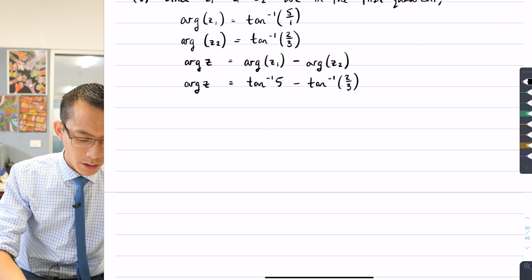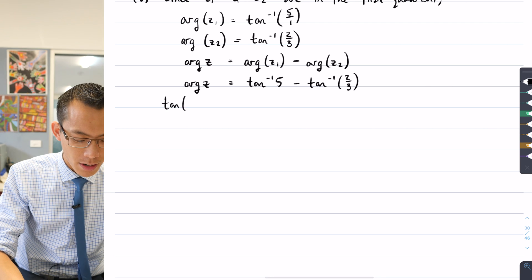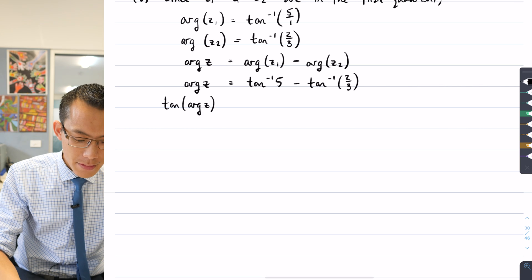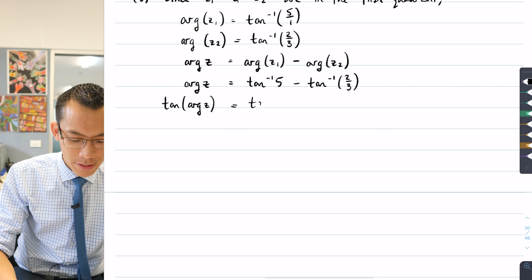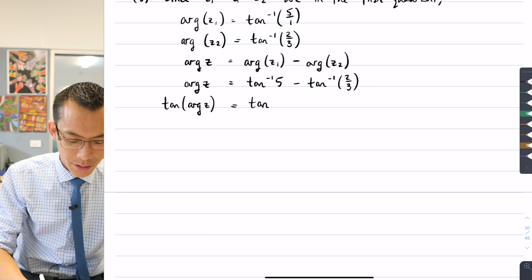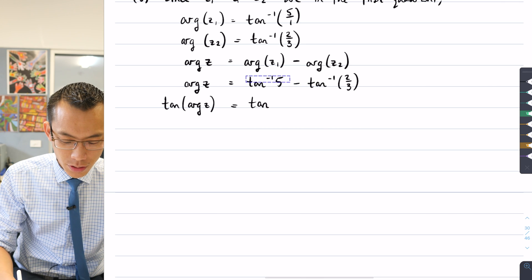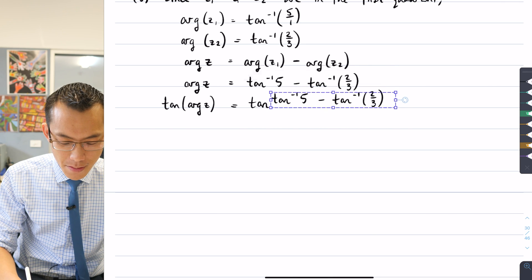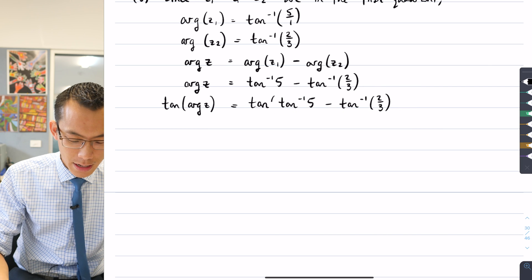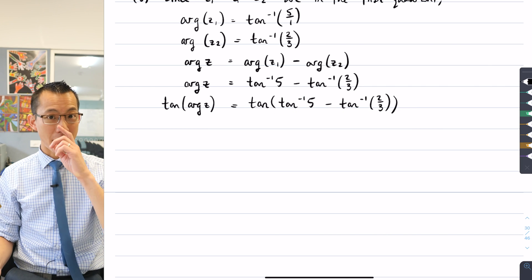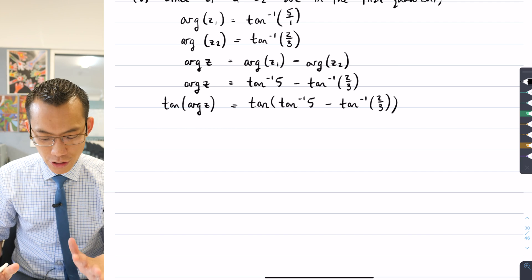So what I'm going to do, as the question suggests, I'm going to take tan of both sides. So I'm going to go tan of arg z, and that means I'm going to have tan of the entire thing on the right hand side.